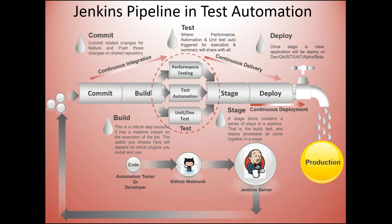Jenkins is an open source Java software system designed to aid in the continuous software integration process. It is a server-based system that runs in a servlet container such as Apache Tomcat. Jenkins supports version control tools such as Git, and can execute projects based on Apache Maven. Arbitrary shell or Windows batch scripts and commands can also be executed.